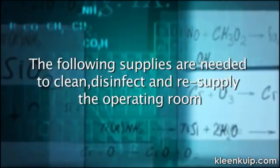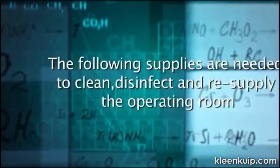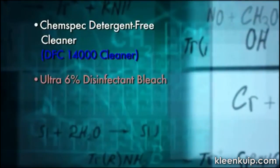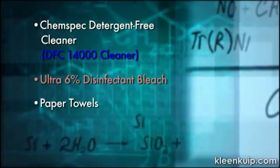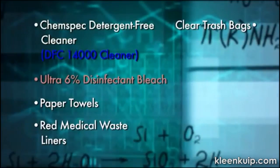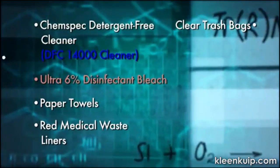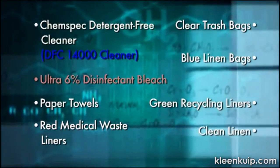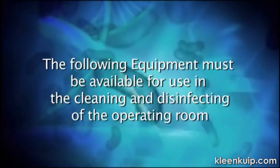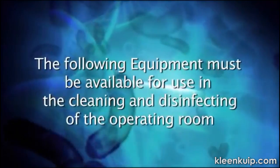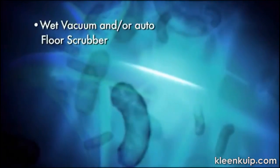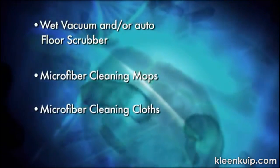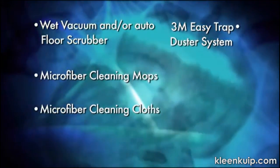The following supplies are needed to clean, disinfect, and resupply the operating room. The following equipment must be available for use in the cleaning and disinfecting of the operating room: wet vacuum and/or auto-floor scrubber, microfiber cleaning mops, microfiber cleaning cloths, 3M Easy Trap Duster System, dustpan and counter brush.